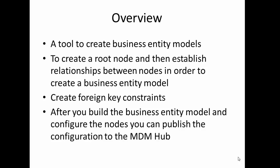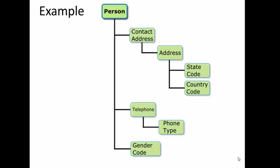When we create the business entity model in the provisioning tool, we first create it, validate it to make sure everything is correct, and then publish it. Once published, it gets synced to the MDM Hub. For example, in this diagram, Person is the root entity while Contact, Address, Telephone, and Gender Code are sub-entities. Contact and Address also has a sub-node called Address, which has fields State Code and Country Code. Similarly, Telephone has a field called Phone Type. This is an example of a business entity model.